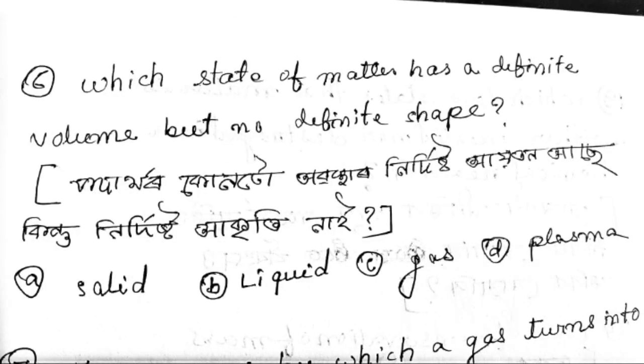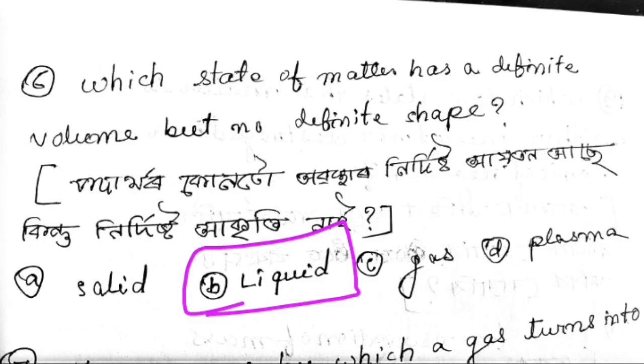Next: Which state of matter has a definite volume but no definite shape? The answer is liquid.